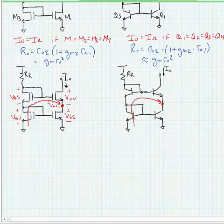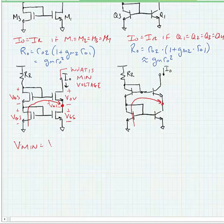So if we ask what the minimum voltage is at this node, it is a VGS plus a VOV.